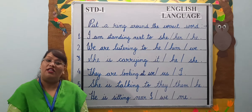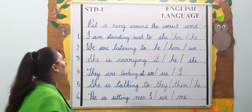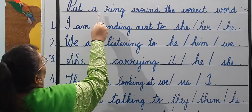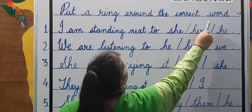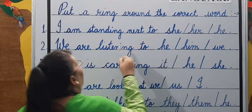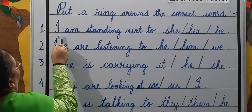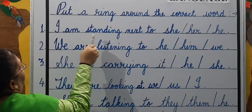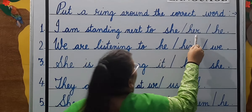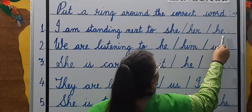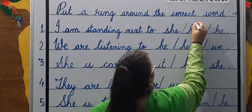Students, let's do an exercise together. Put a ring around the correct word. Number one: I am standing next to — she, her, or he? The correct answer is: her.